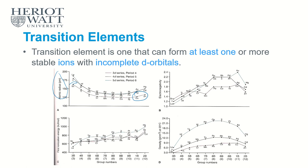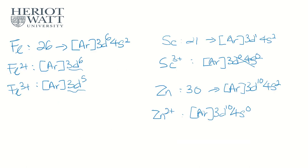Why does the atomic radius decrease across the period for transition metals? It's because moving across a period, the core charge is increasing but the shielding effect remains constant. Therefore, atomic radius decreases from scandium to nickel.